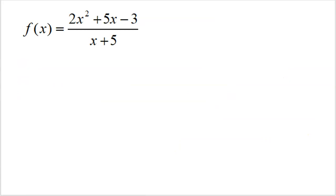Looking at this example, the numerator's degree is two and the denominator's degree is one, so the top degree is bigger. First, we do not have a horizontal asymptote. We have a slant asymptote. We divide the leading terms: 2x squared divided by x. The x's reduce and we get just 2x.